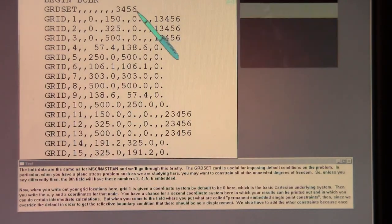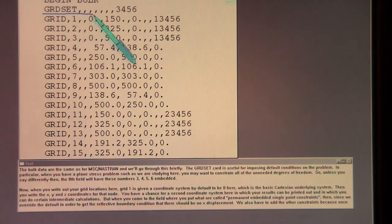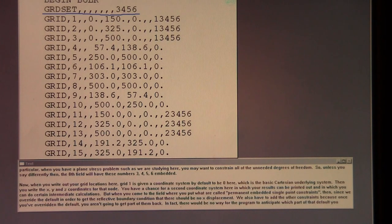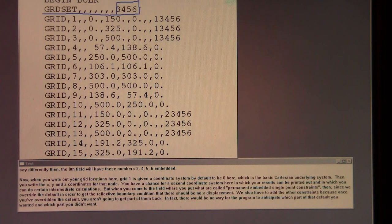The bulk data are the same as for MSC Nastran, and we'll go through this briefly. The grid set card is useful for imposing default conditions on the problem. In particular, when you have a plane stress problem, such as we are studying here, you may want to constrain all of the unneeded degrees of freedom. So, unless you say differently, then the eighth field will have these numbers 3, 4, 5, 6 embedded.